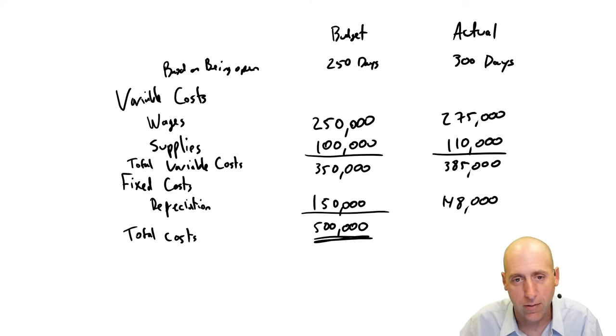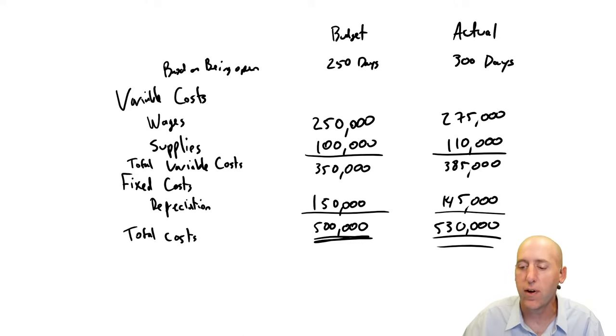Their equipment depreciation was $148,000 for whatever reason, maybe they got rid of a piece of equipment or something like this. So the overall cost, actually let's make it $145 so it's an even number here. $530,000. So their overall cost was $530,000.